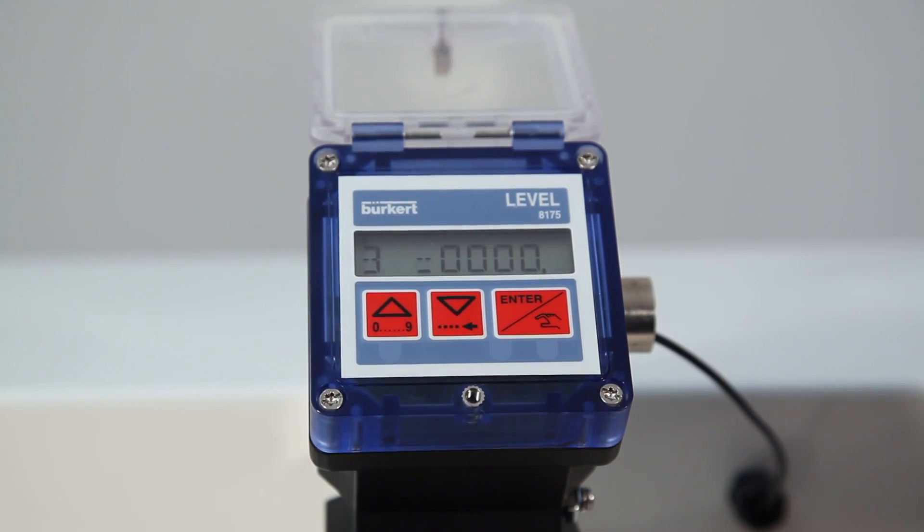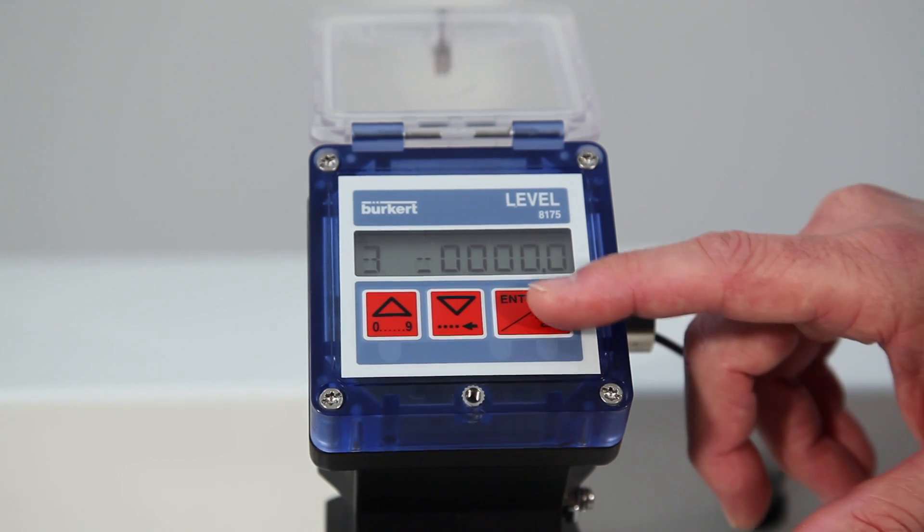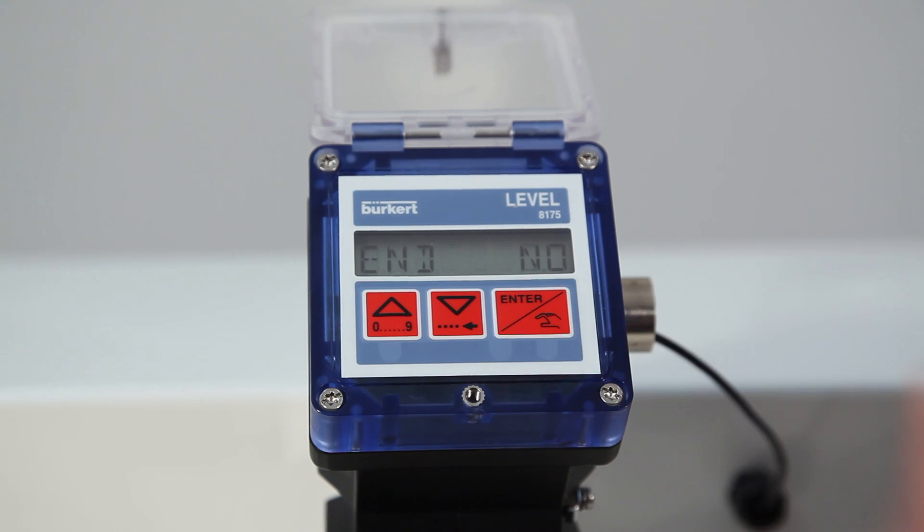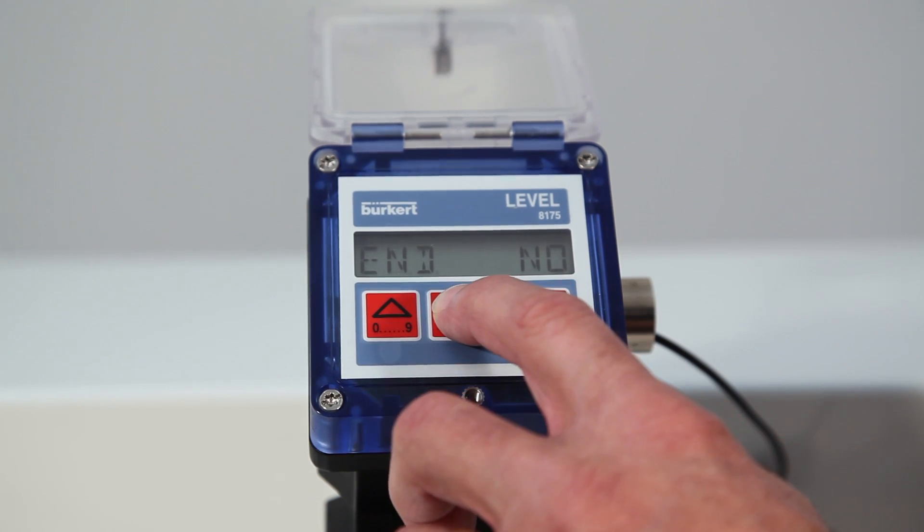And now an associated volume for that third distance point appears. Hit enter once again to confirm. And N NO again will appear. In this case, we will end it at three points. But again, you can do this up to 12 points.